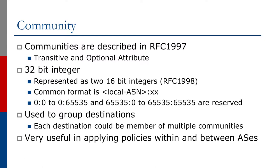The next attribute we will look at is the BGP community. BGP communities are described in RFC 1997. The communities are a transitive attribute and they're optional, so you don't have to set them, and indeed several operators make no use of BGP communities whatsoever. But in fact BGP communities, of all the attributes, is probably one of the most useful and most powerful attributes when it comes to implementing BGP policies on the internet today.